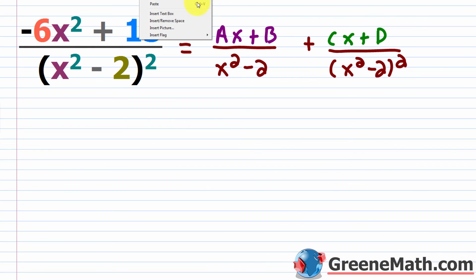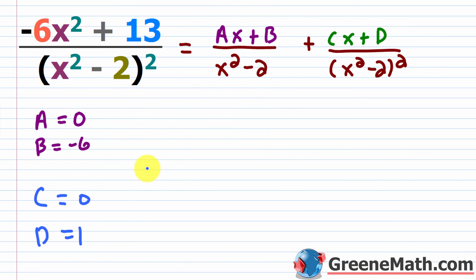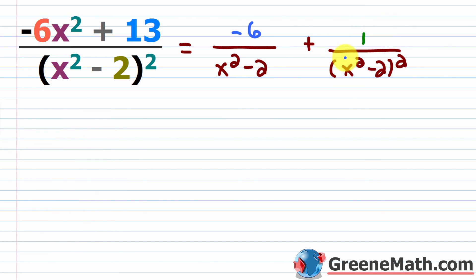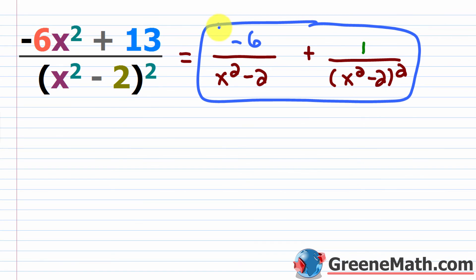Now we plug everything back in. a is zero so ax is gone, b is negative 6, c is zero so cx is gone, and d is 1. So our final answer is negative 6 over x squared minus 2, plus 1 over x squared minus two quantity squared. You can always check by finding a common denominator and reversing the process.